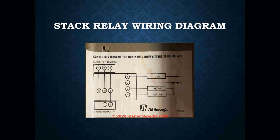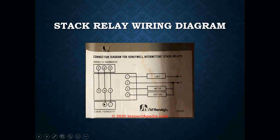The wiring for these units was relatively simple. Usually you'd see terminals one through four. Terminal one is your power coming in, after a limit or high limit switch. Terminal two is your neutral. Terminal three goes to your motor. Terminal four goes to your ignition transformer, tied back to number two. Your thermostat — whether an aquastat or a regular warm-air thermostat — would connect to W and B on the stack relay, and to R and W on your thermostat or aquastat.